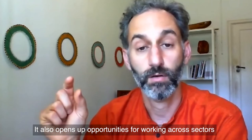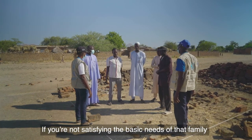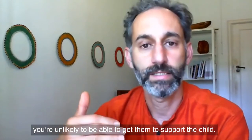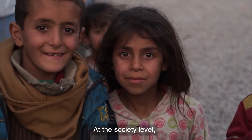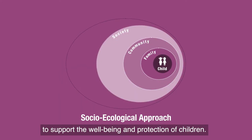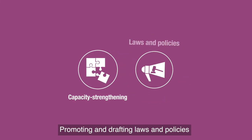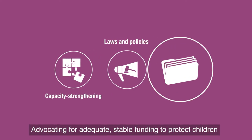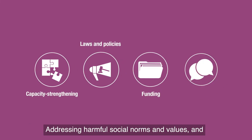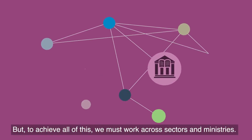The approach also opens up opportunities for working across sectors. If you're looking at a family or community as a unit, and you're not satisfying their basic needs, you're unlikely to get them to support the child. At the society level, we have an opportunity within the broader justice, education and child protection systems to support children's well-being and protection. This includes strengthening the capacity of existing actors, promoting and drafting laws and policies to support children's rights, advocating for adequate and stable funding, addressing harmful social norms and values, and building back better with stronger social welfare systems and safety nets. To achieve all of this, we must work across sectors and ministries.